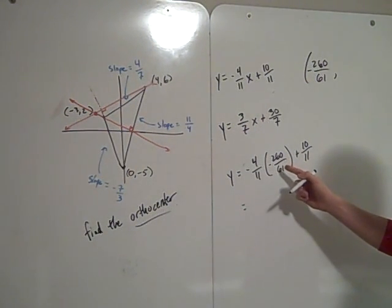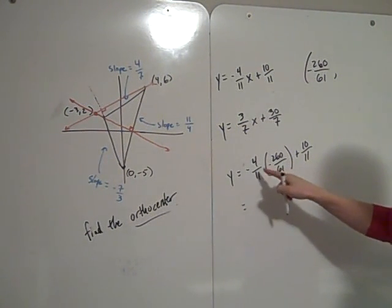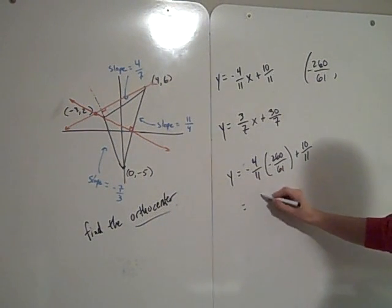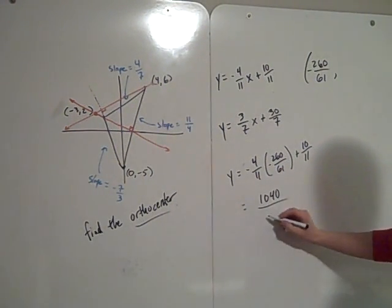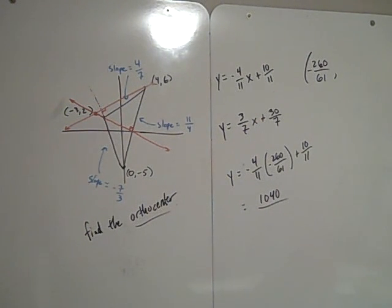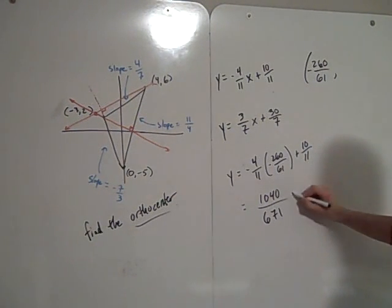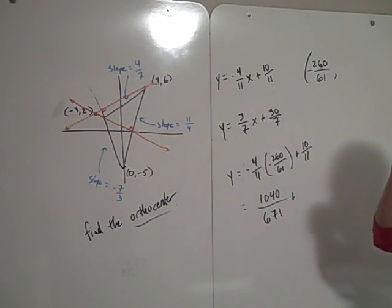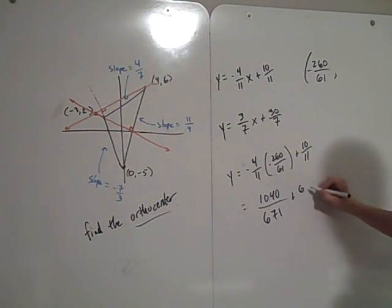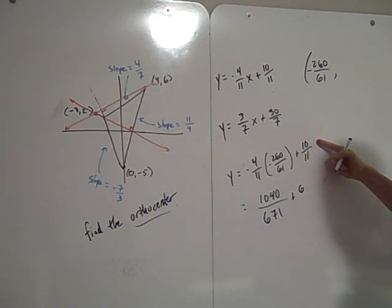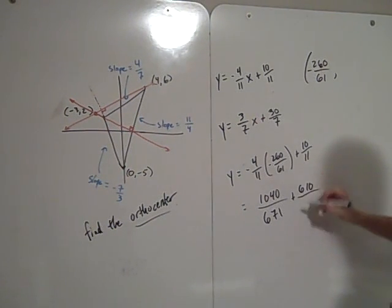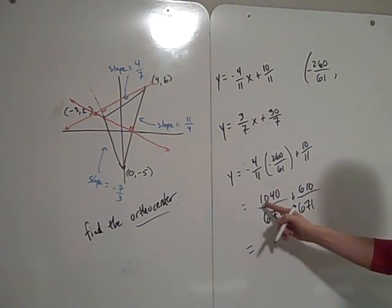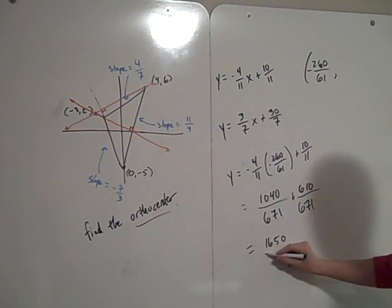This is 1040 over 11 times 61, which equals 671. Plus, multiply this top and bottom by 61 to get 671 as a common denominator, so this will be 610 over 671. The y value is 1650 over 671.